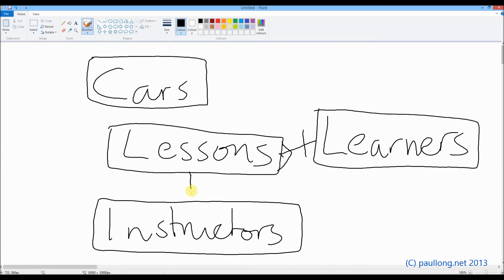Then, let's ask ourselves the same question between lessons and instructors. A lesson will only ever have one instructor at a time. But each instructor will teach lots of lessons. The lesson will only involve one car. But a car will be used lots of times in lots of lessons. We now have our relationships drawn.